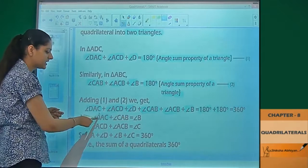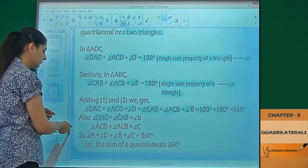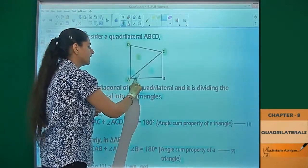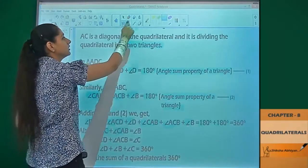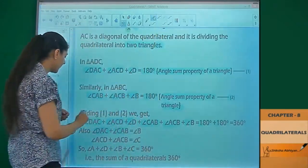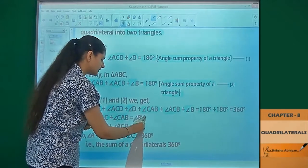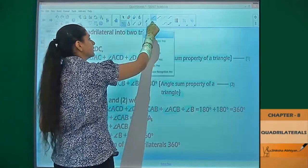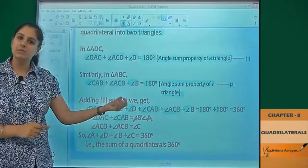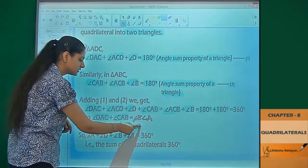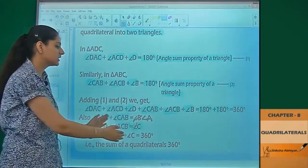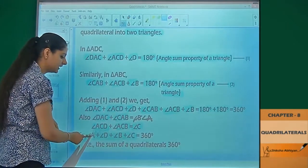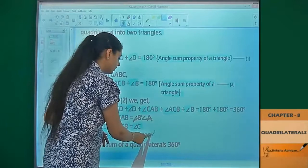Now we can say that angle DAC plus angle CAB is equal to angle A. We are combining. This angle is equal to angle A. Next, angle ACD plus angle ACB is equal to angle C. We're combining two angles to get one angle. So in this case, if I substitute these two angles and these two angles as C and A, then we are left with angle A plus angle D plus angle B plus angle C is equal to 360 degrees.